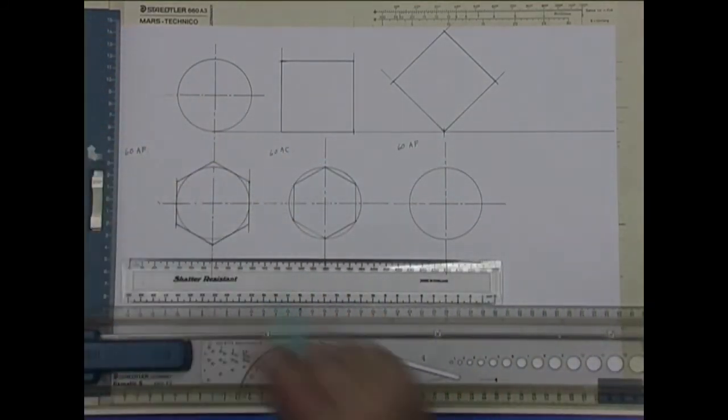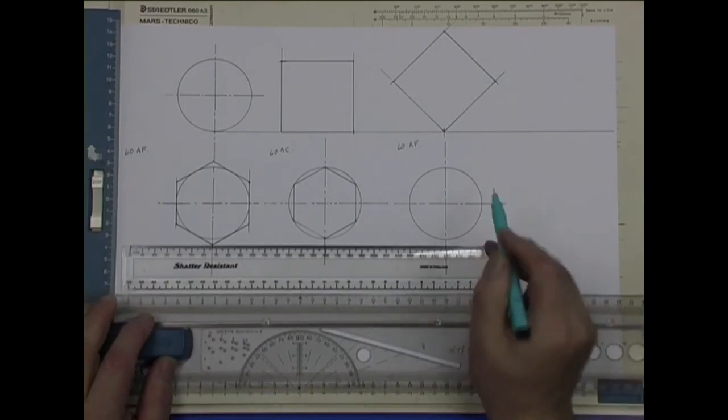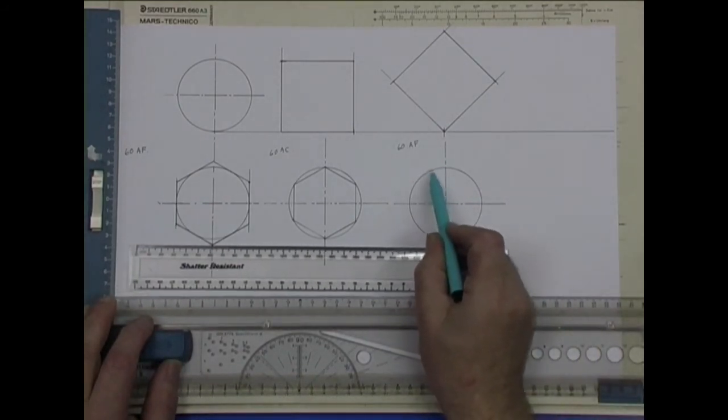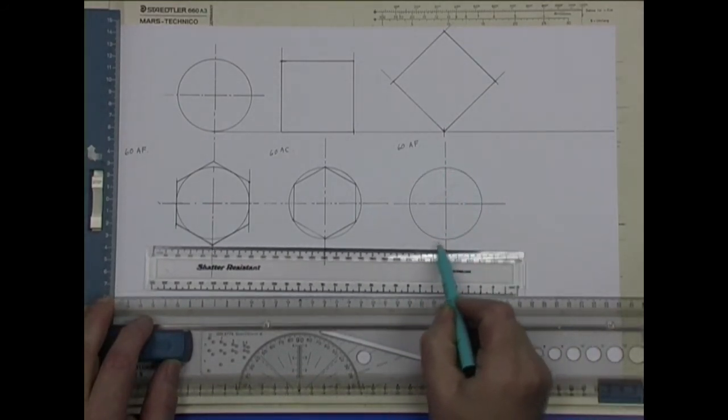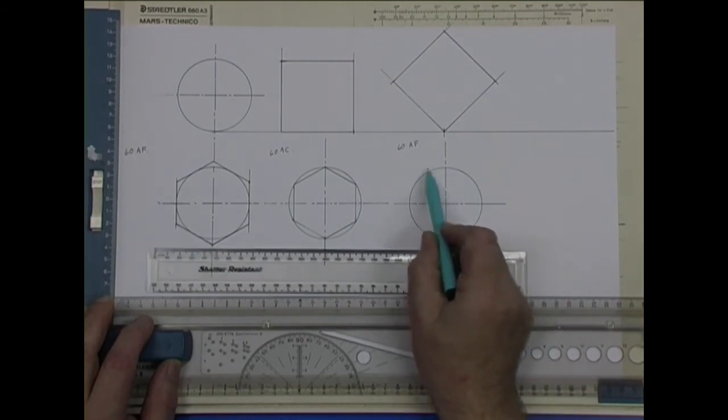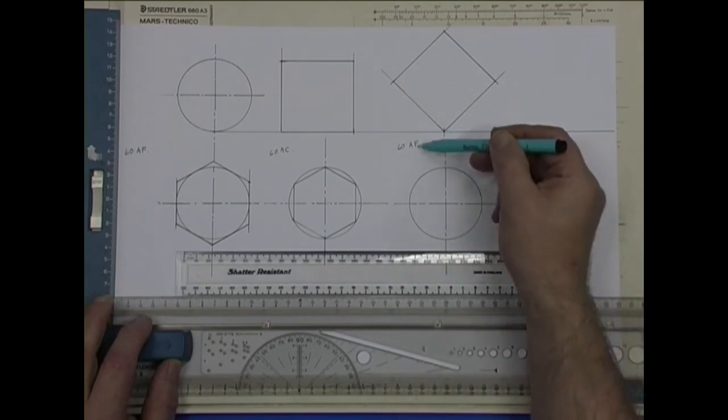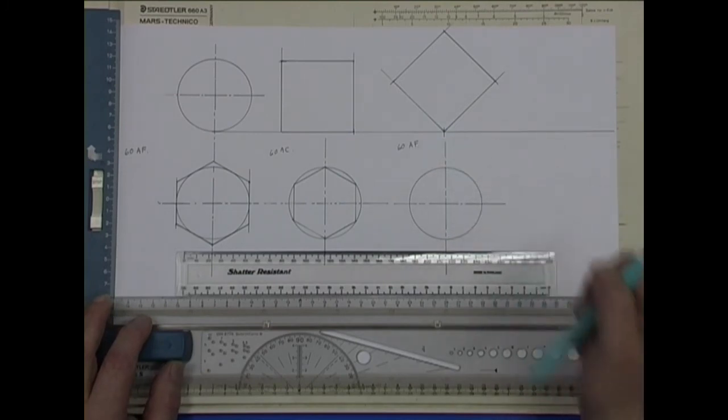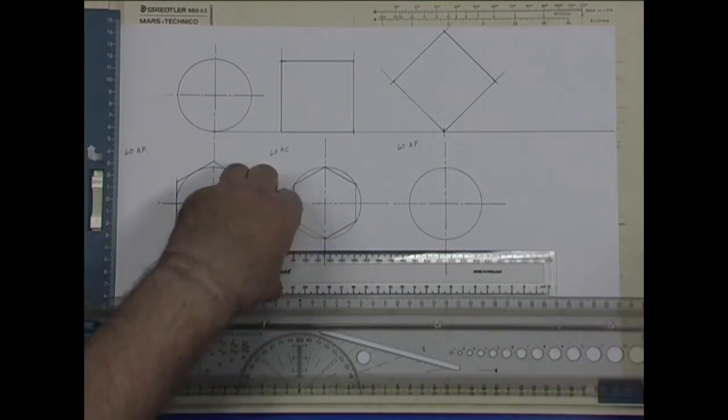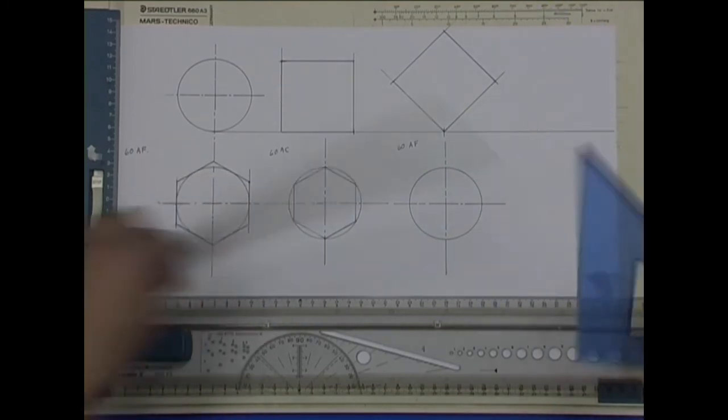Now with an octagon, it's an eight sided figure. We have a parallel line touching across those. So if it just touches that side, just touches that side, that means it's 60 between the faces, which is the flats. So that will give us 60 across the flats.